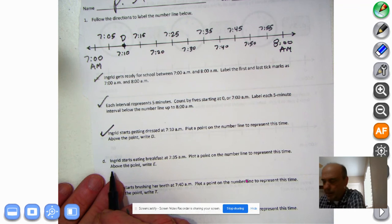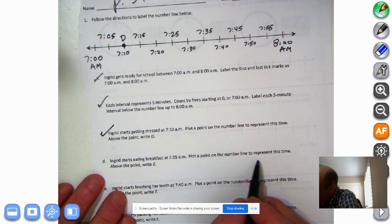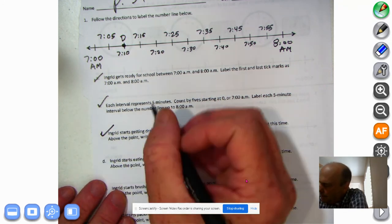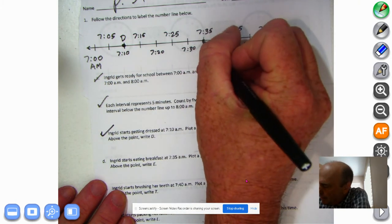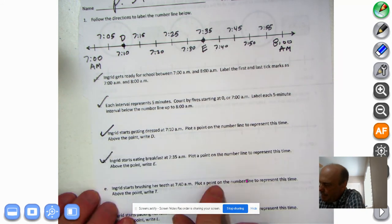Number D. Ingrid starts eating breakfast at 7:35 AM. Plot a point on the number line to represent this time. Above the point, write E. Okay, so 7:35. There's seven right there. And we'll write it below. We'll write E.